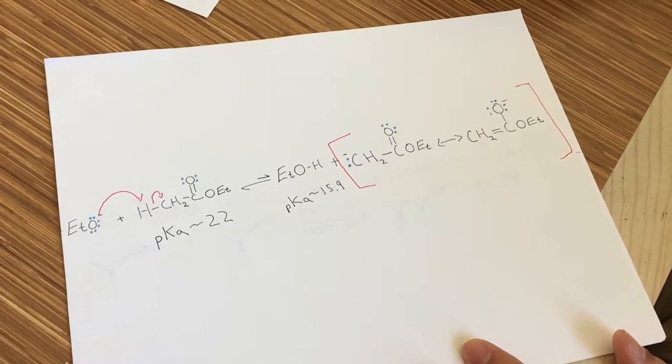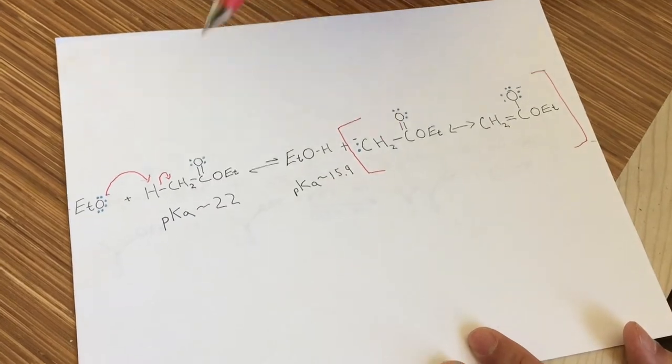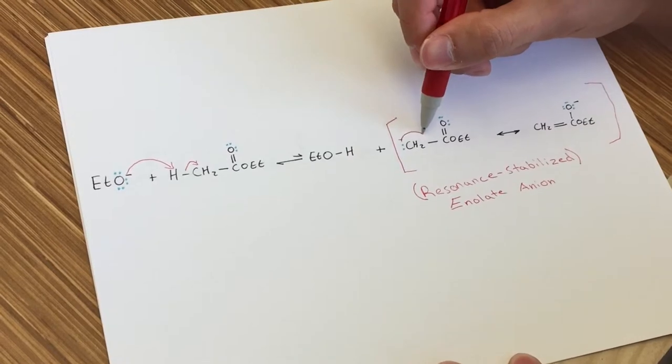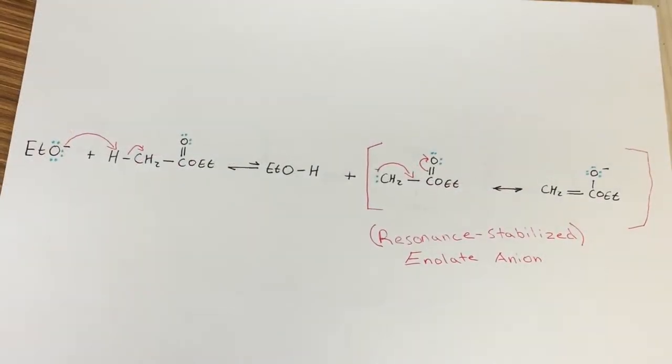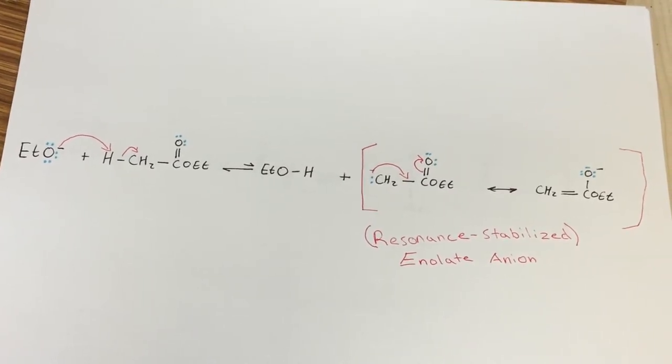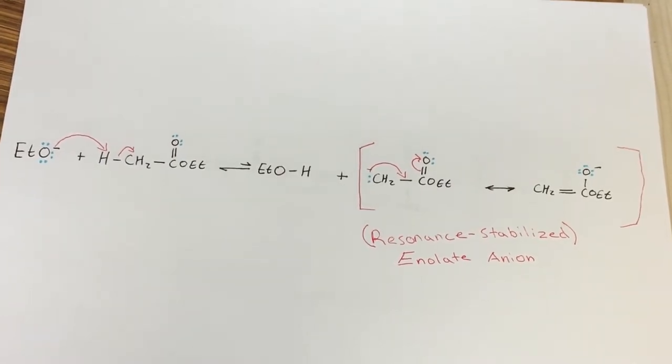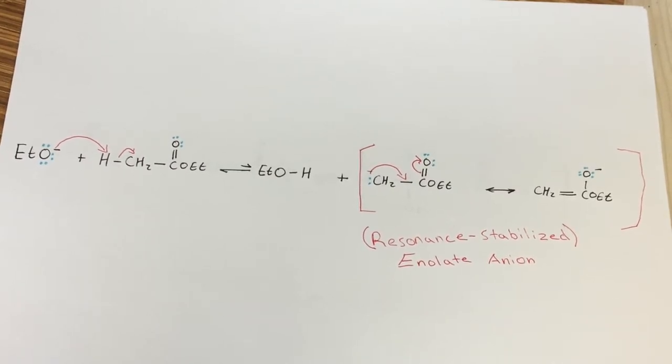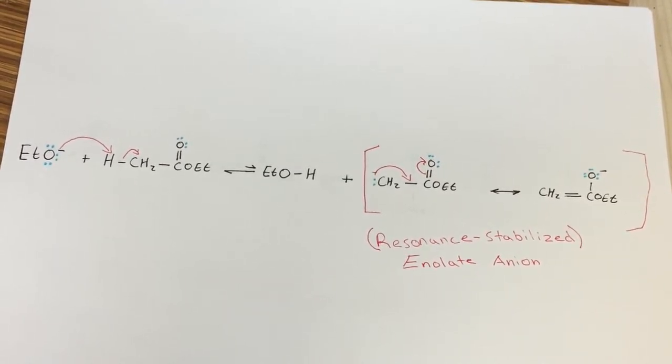The pKa's of the conjugate acids of the alcohol and the alpha hydrogens help the enolate anion formation. Because the alpha hydrogen of an ester is the weaker acid and the ethoxide ion is the weaker base, the position of equilibrium for this step lies very much toward the left. The concentration of the enolate anion is very low compared with that of the ethoxide ion and ester. Thus, there is an excess of ester to react with the small amount of enolate anion that forms.